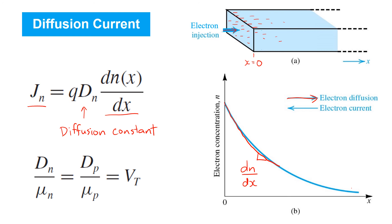The diffusion constants are related to the corresponding carrier mobilities by the thermal voltage Vt. Now, electrons diffusing from left to right means the net flow of negative charge from left to right through the semiconductor, which corresponds to positive current flow from right to left. As was the case with drift current, diffusion currents can arise due to both electrons and holes simultaneously. So the total diffusion current is the sum of the diffusion current due to both holes and electrons.